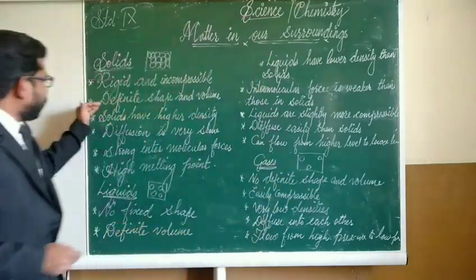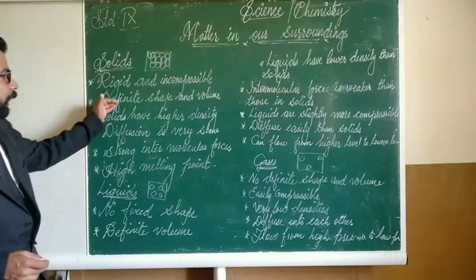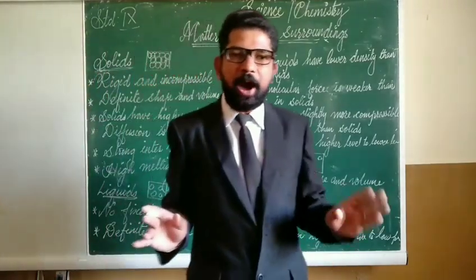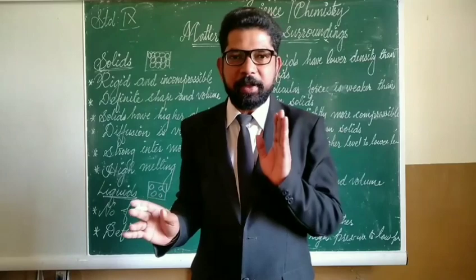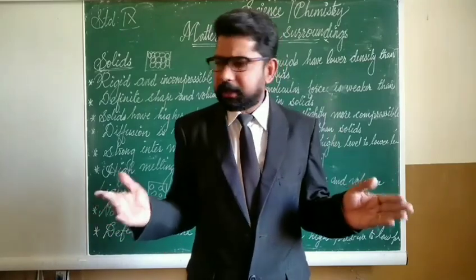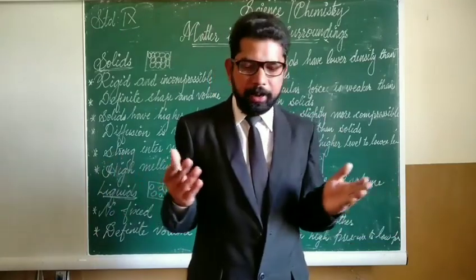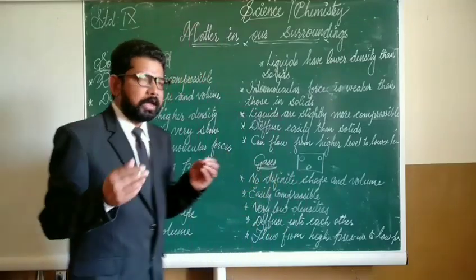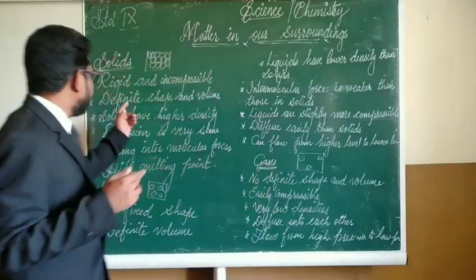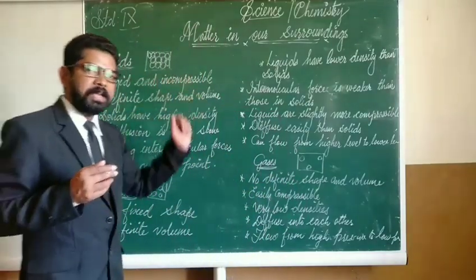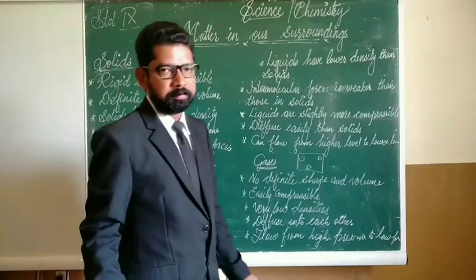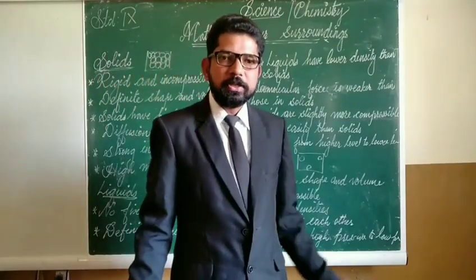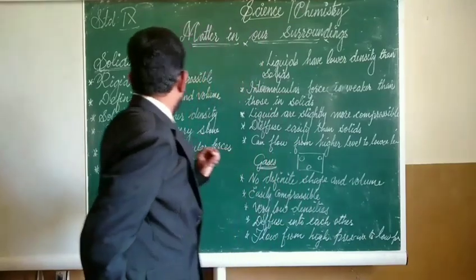The next property is definite shape. All solids have a definite shape — whether it is a dust particle, a book, or any other object, there will be a definite shape. Solids also have a definite volume, meaning we can measure the volume of solids.